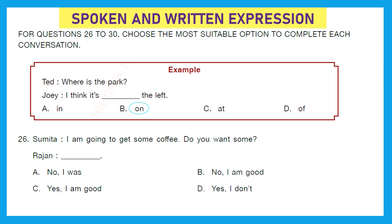Moving to the next section: Spoken and Written Expression. For questions 26 to 30, choose the most suitable option to complete each conversation. Question 26 — Sumita: 'I am going to get some coffee. Do you want some?' Rajan: dash. Options are: No I was, No I am good, Yes I am good, Yes I don't. The right answer is option B: 'No, I am good.'